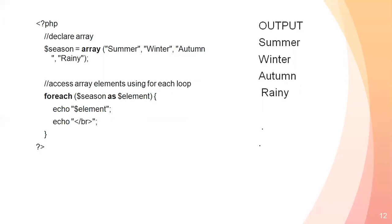As we studied in our previous slide, the syntax is foreach ($array as $value). So here, foreach ($season as $element) — where $season is the array name and $element is the value variable. Inside the curly braces I wrote the echo statement to print each element on a new line.